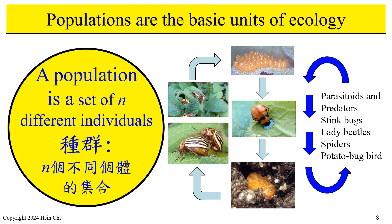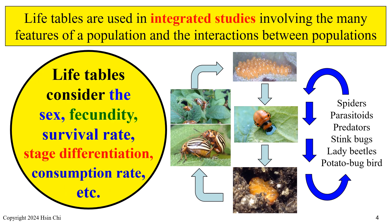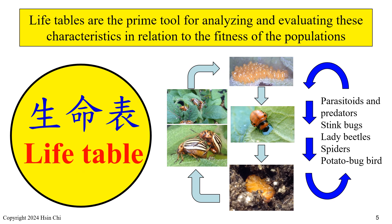Populations are the basic units of ecology. A population — pest, predator, or parasitoid — is a set of different individuals. Life tables are used in integrated studies involving the many features of a population and the interactions between populations. They consider the sex, fecundity, survival rate, stage differentiation, consumption rate, among other parameters. Life tables are the prime tool for analyzing and evaluating these characteristics in relation to the fitness of populations.